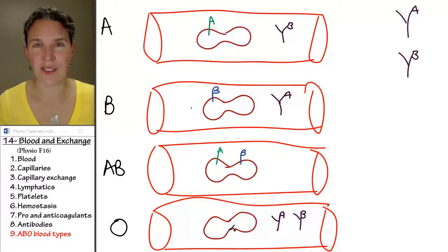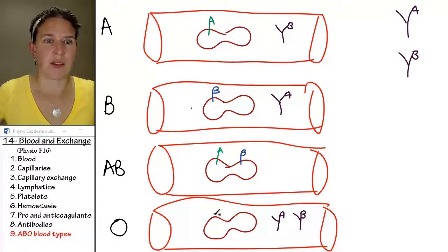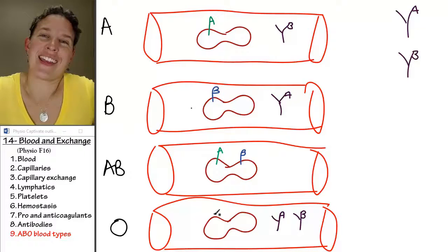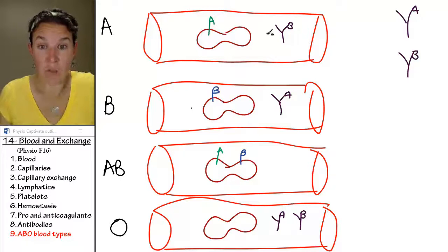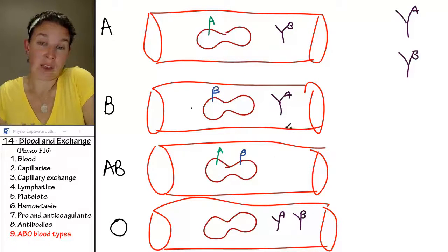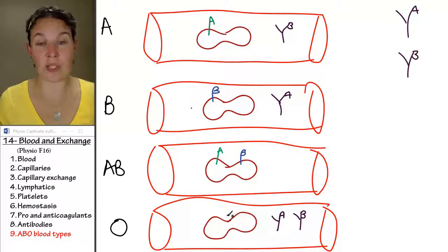What about a type O person? Who can they donate to? Who can they donate red blood cells to? Everybody. It's magic. They have no antigens on their red blood cells, so they can go anywhere. It doesn't matter how many antibodies you have in your blood. You aren't going to be able to kill anything because there's nothing there to attach to.